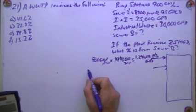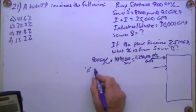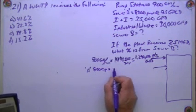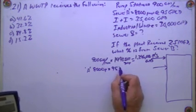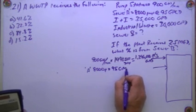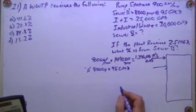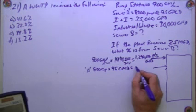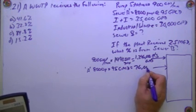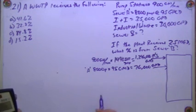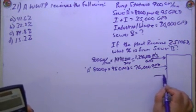So Sewer A is going to be 8,000 people times 95 GPCD equals 760,000 gallons per day.